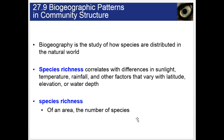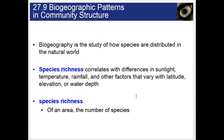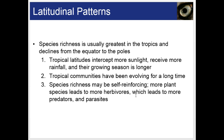Biogeographic patterns and community structure: biogeography is the study of how species are distributed in the natural world. Species richness correlates with differences in sunlight, temperature, rainfall, and other factors that vary with latitude, elevation, and water depth. The latitudinal pattern shows that species richness is usually greatest in the tropics and declines from the equator to the poles. Tropical latitudes intercept more sunlight, receive more rainfall, and have longer growing seasons. Tropical communities have been evolving for a long time, and species richness may be self-reinforcing: more plant species leads to more herbivores, which leads to more predators and parasites.